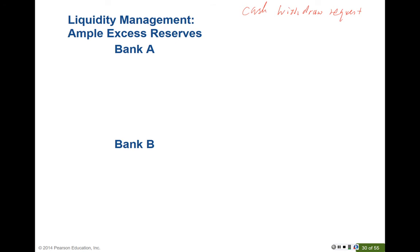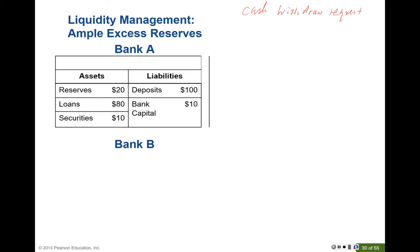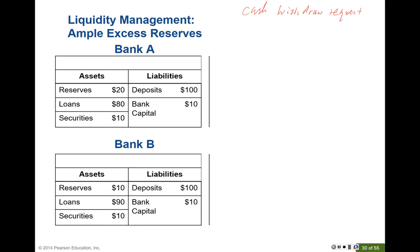I'm going to use Bank A and Bank B to illustrate liquidity risk. Here are the simple balance sheets of Bank A and Bank B. If you look at the liability and equity side, these banks are almost the same — both have deposits of $100 and bank capital of $10.